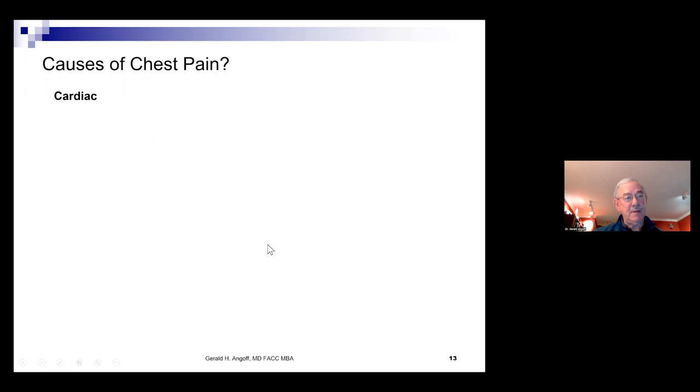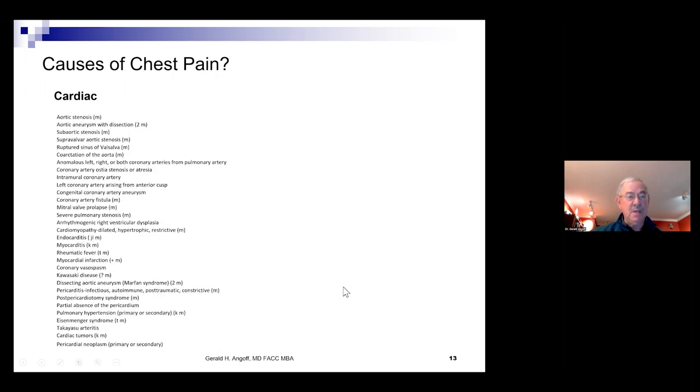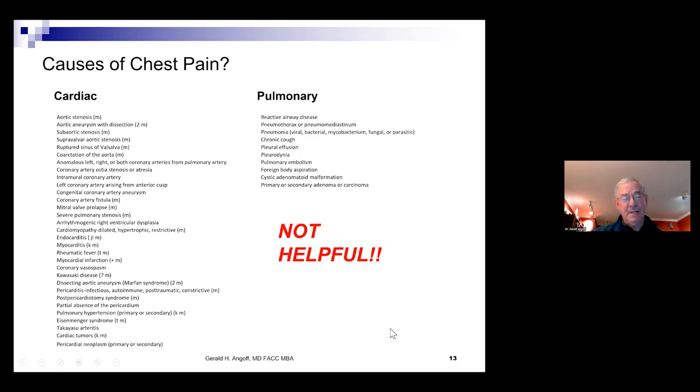Recall children are not small adults and heart attacks, myocardial infarction with extremely rare exceptions do not occur in children. So what are the possible causes of chest pain? Well, there are cardiac causes. And if you delve into the literature, this is the sort of thing that you'll find. And lists like these are not helpful. How could you ever exclude each of these elements? Or even remember a fraction of them?